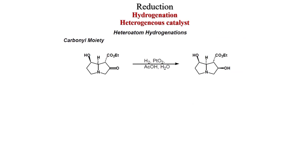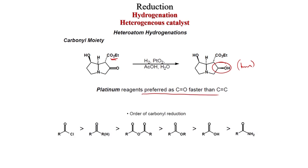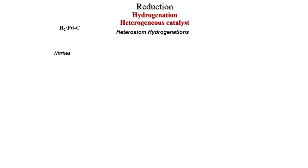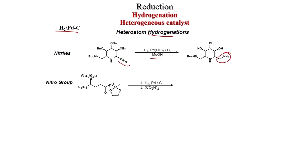Carbonyl moieties can also be reduced by heterogeneous catalysis. For example, a substrate with a hydroxy group and an ester group: with H2, Pd(OH)2/C, acetic acid, water, platinum is used — CO reduction is faster than C=C reduction. The carbon reduction order is: acid chloride > ketone > anhydride > ester > carboxylic acid > amide. H2/Pd(C) can also do hydrogenation. Heterogeneous hydrogenation: a nitrile is reduced to an amine with H2, Pd(OH)2/C in methanol; the nitrile is reduced to the amine, which then cyclizes to give the cyclic amine product.